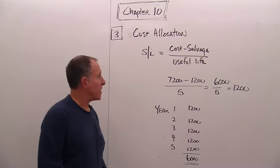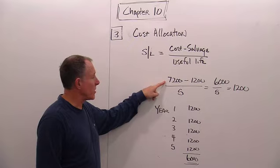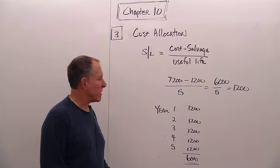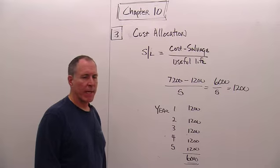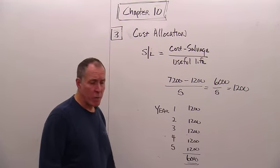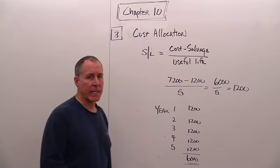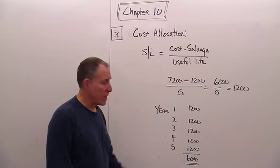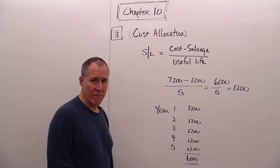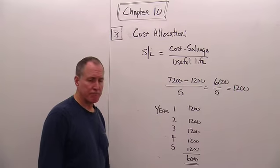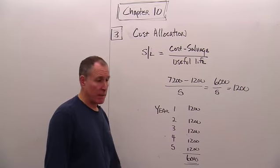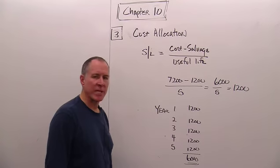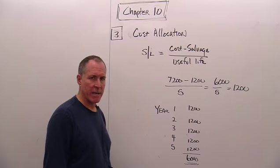For the straight line method, we take the cost of $7,200 less the salvage of $1,200, which is $6,000, and divide by five years — giving $1,200 per year. If we bought the asset partway through the year, we'd take only that portion of the year, but in our case we bought it at the beginning, so we take a full year in year one, and $1,200 each year through year five — $6,000 total. At the end, our estimate was correct and we get $1,200 back.